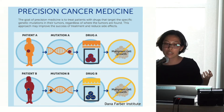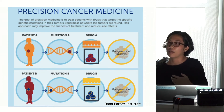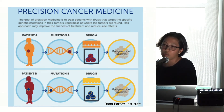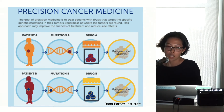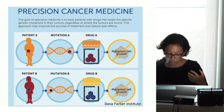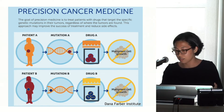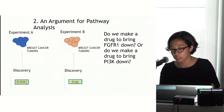But the truth is it's not as simple as having a single mutation and finding a single drug to treat it. Cancer genes have a lot of functions and they really interact with each other in complex ways.